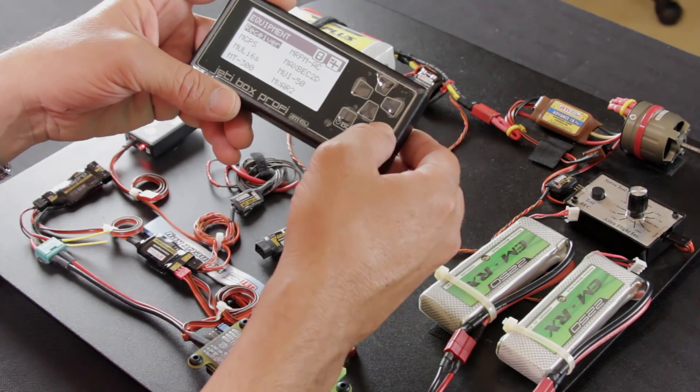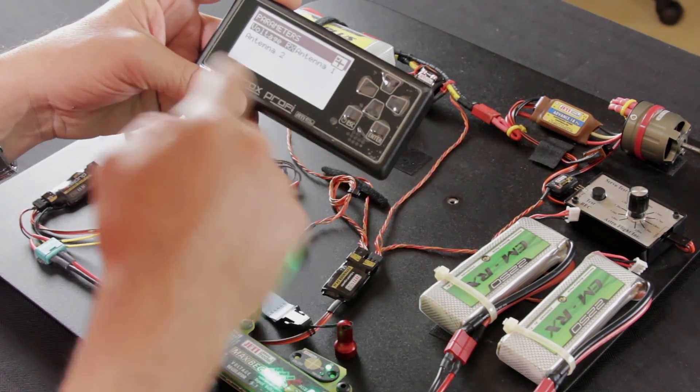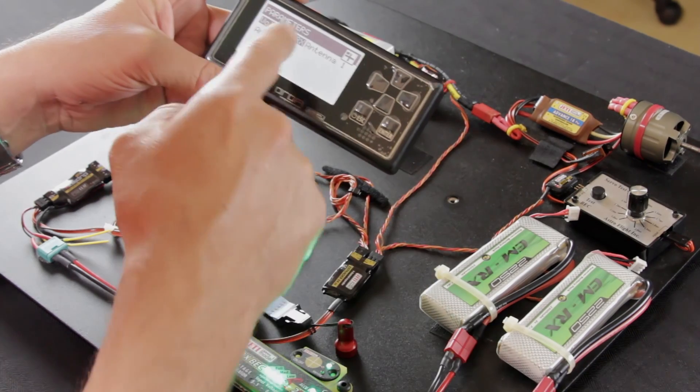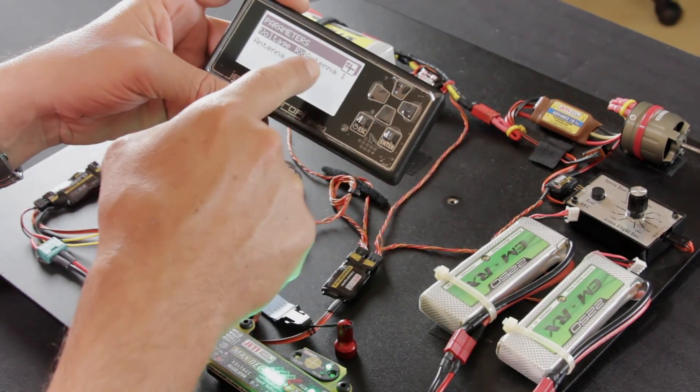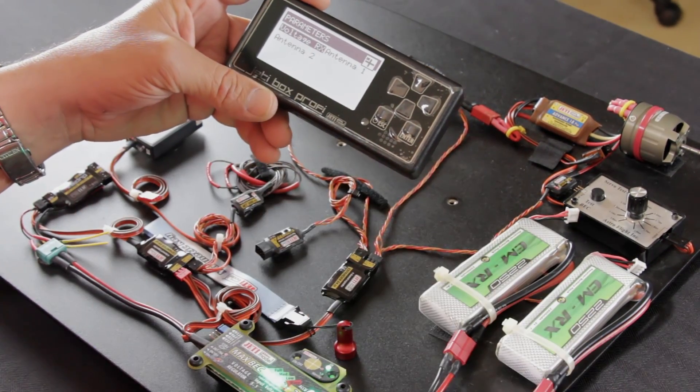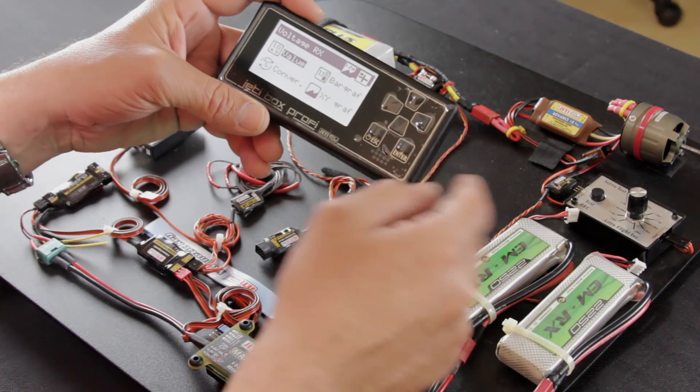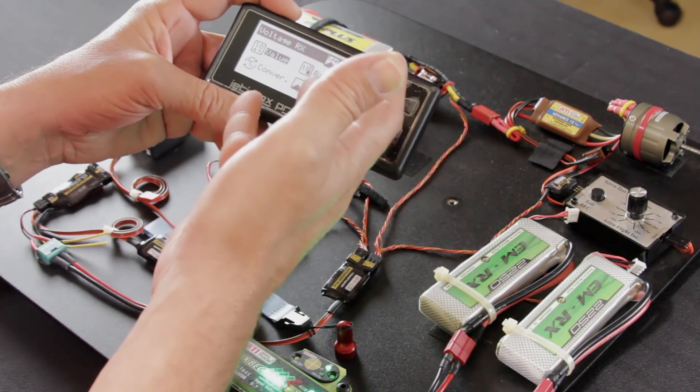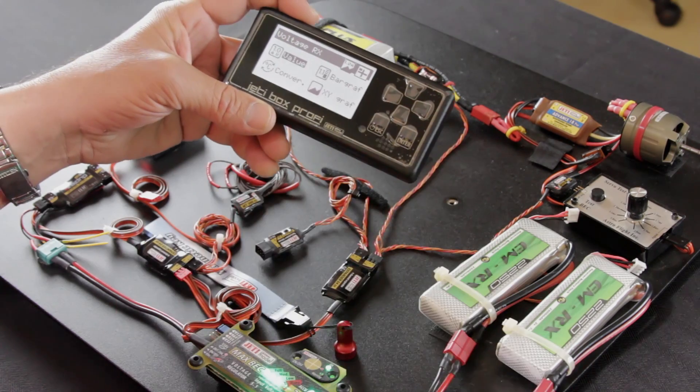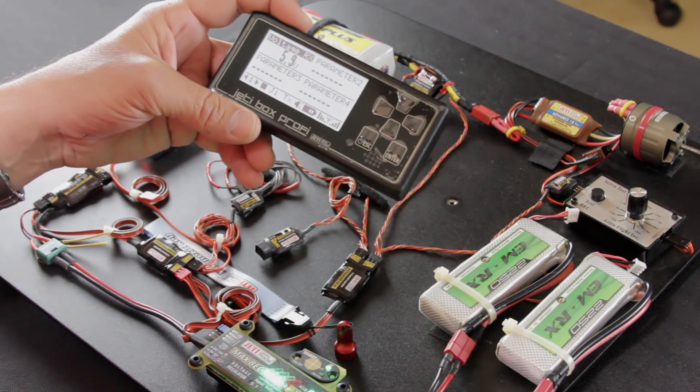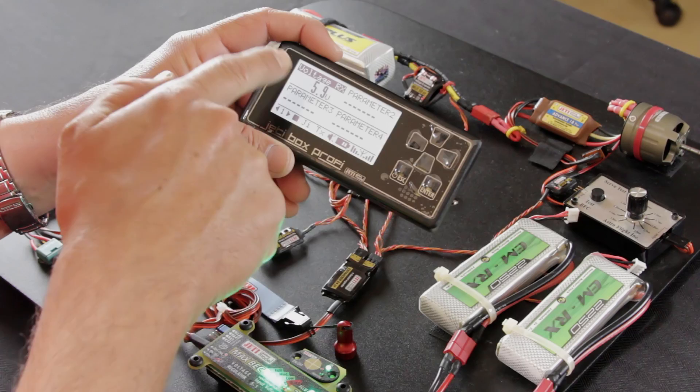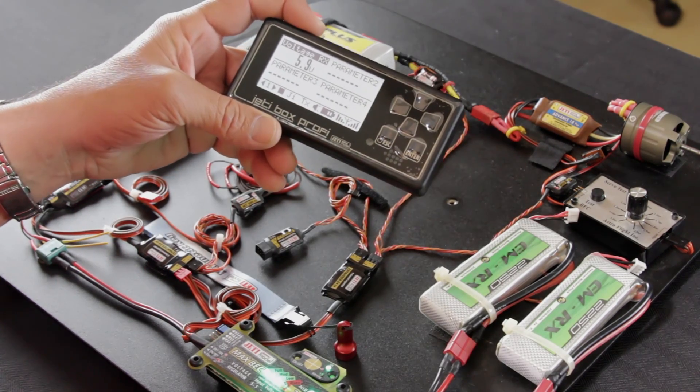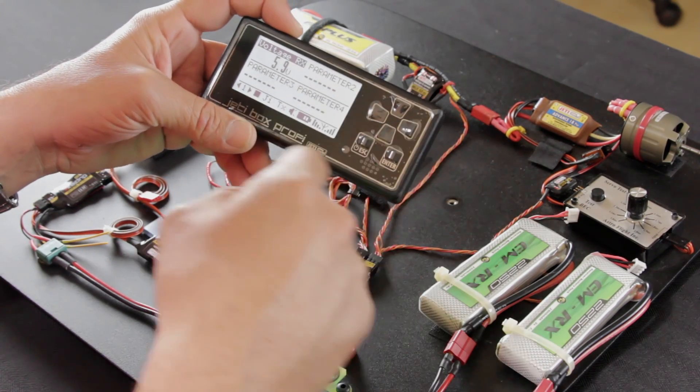We'll choose one of those. We'll do the receiver. So you pick the piece of equipment, then it's going to give you the parameters of data that equipment gives you, which is voltage, receiver voltage, antenna strength 1, antenna strength 2. We're going to choose voltage. Now you can choose how that's displayed, whether that's a numerical value, a bar graph, or an XY graph. We're going to do a numerical value. Once you click Enter, you'll see that is immediately displayed on your JettyBox Profi, or ProfiBox US.